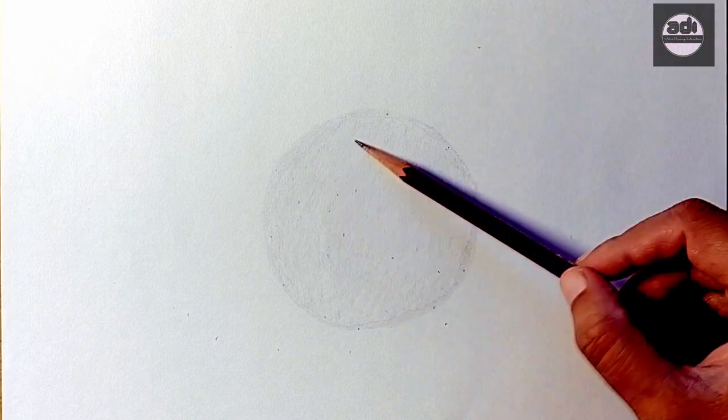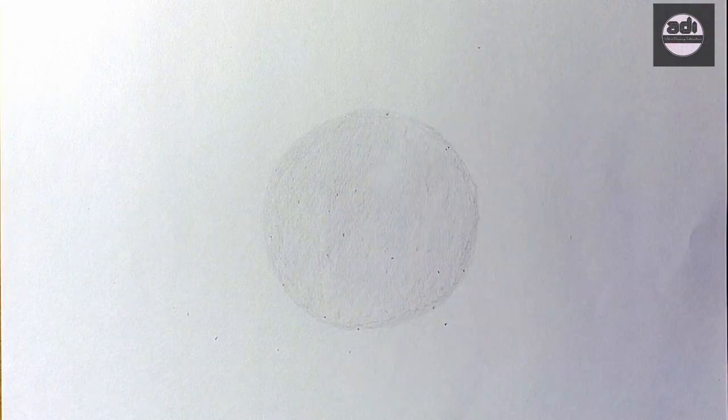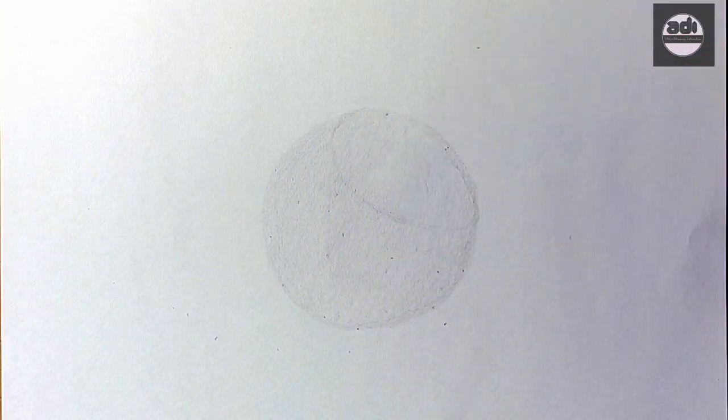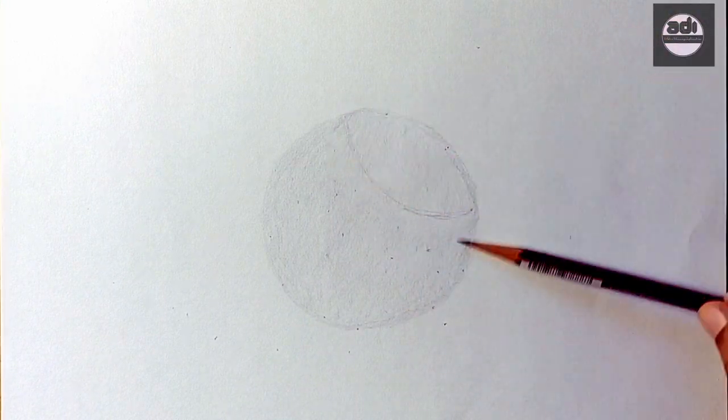Then using your kneaded eraser, you will pick out a highlight. You will then mark the center light area by putting a ring around it with the 2H pencil. You will do this exercise every day.